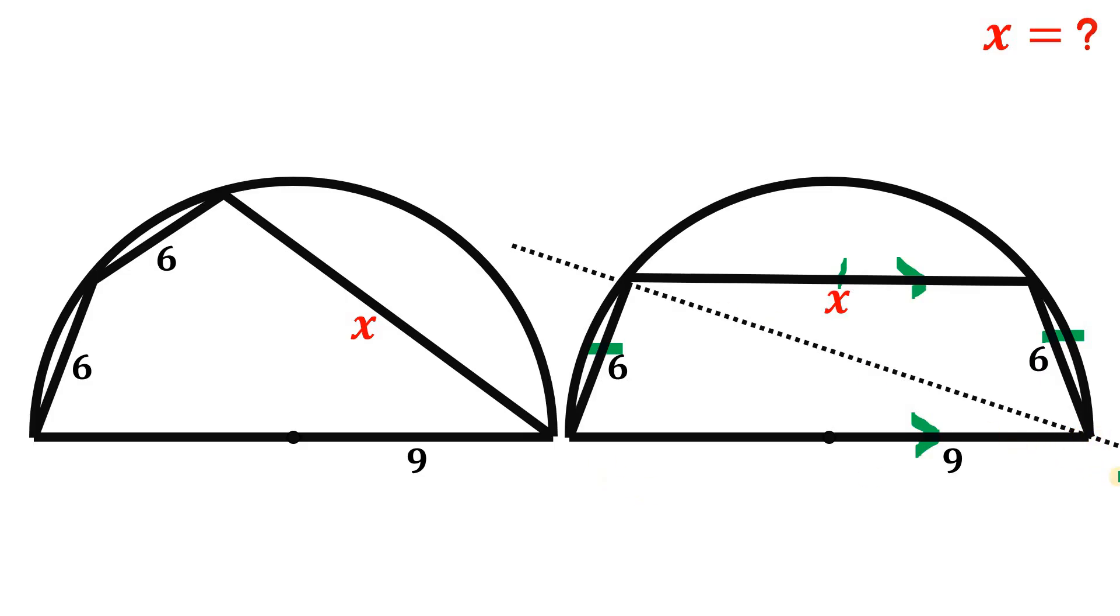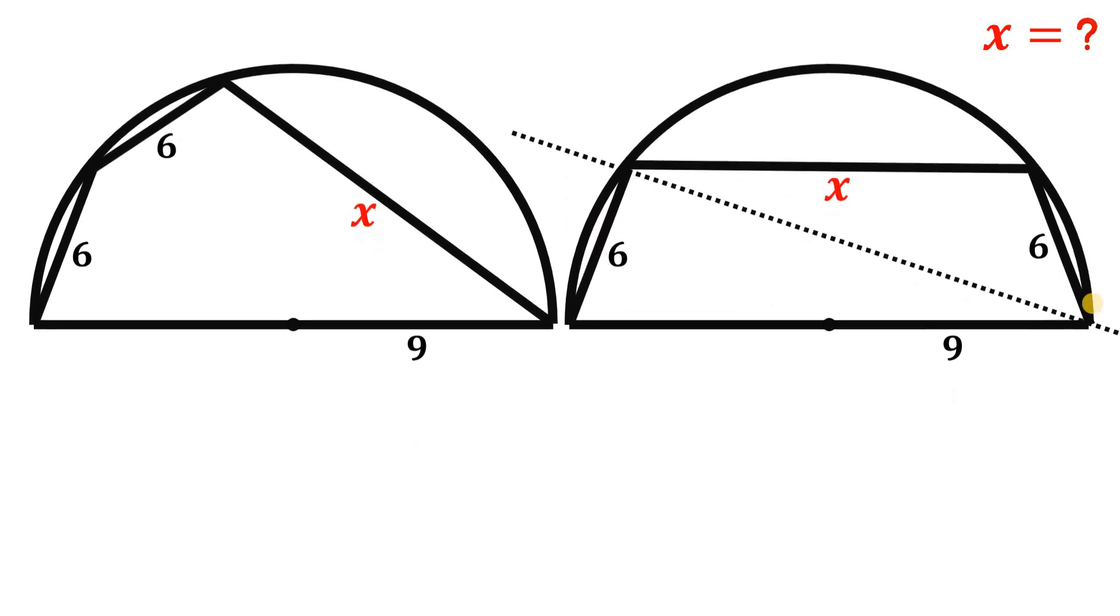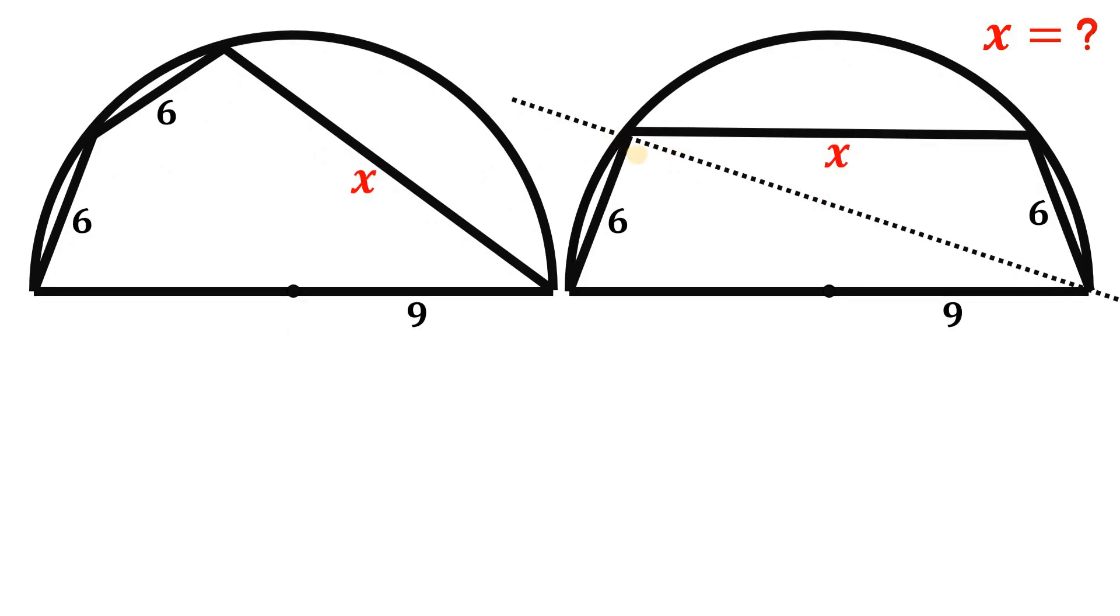And now we will use this concept, this figure, to answer this question. All right, now let's use the segment because this segment will create a right angle like this, because this triangle's hypotenuse is the diameter.